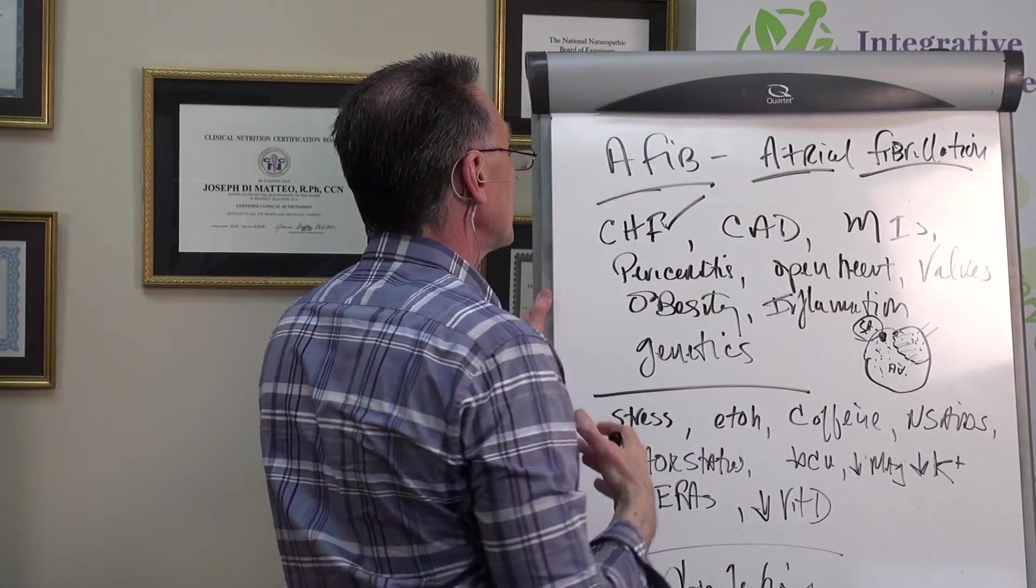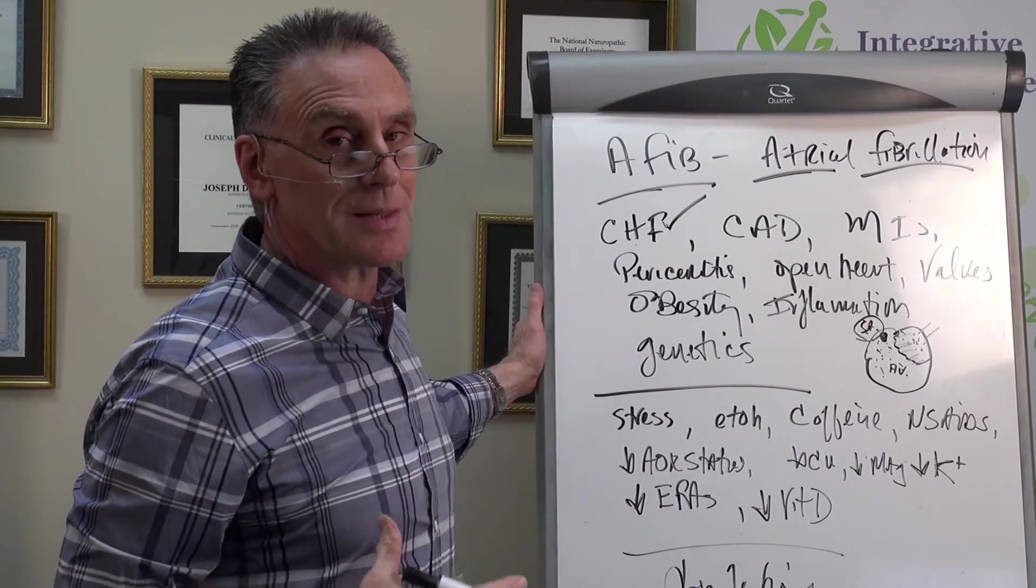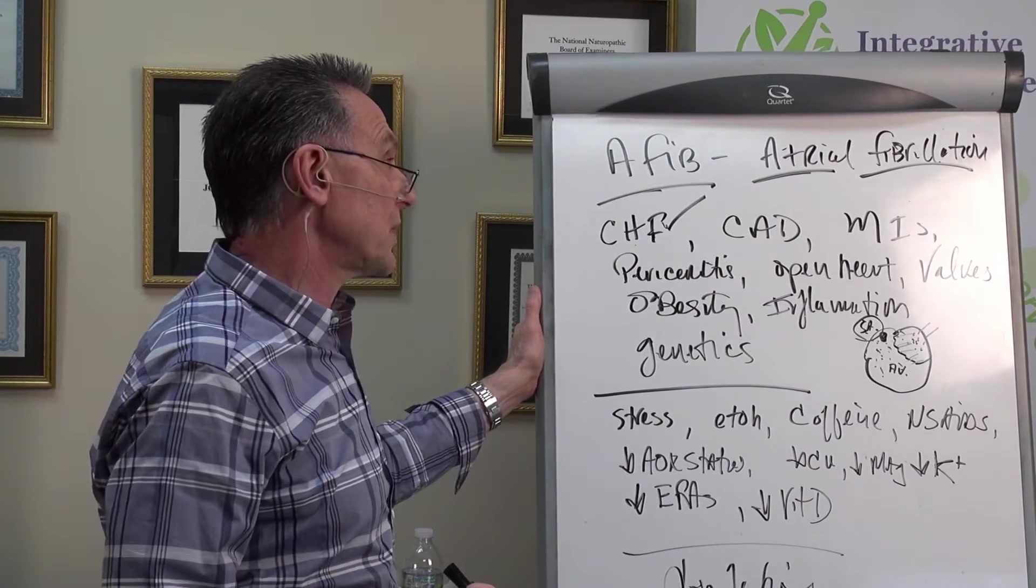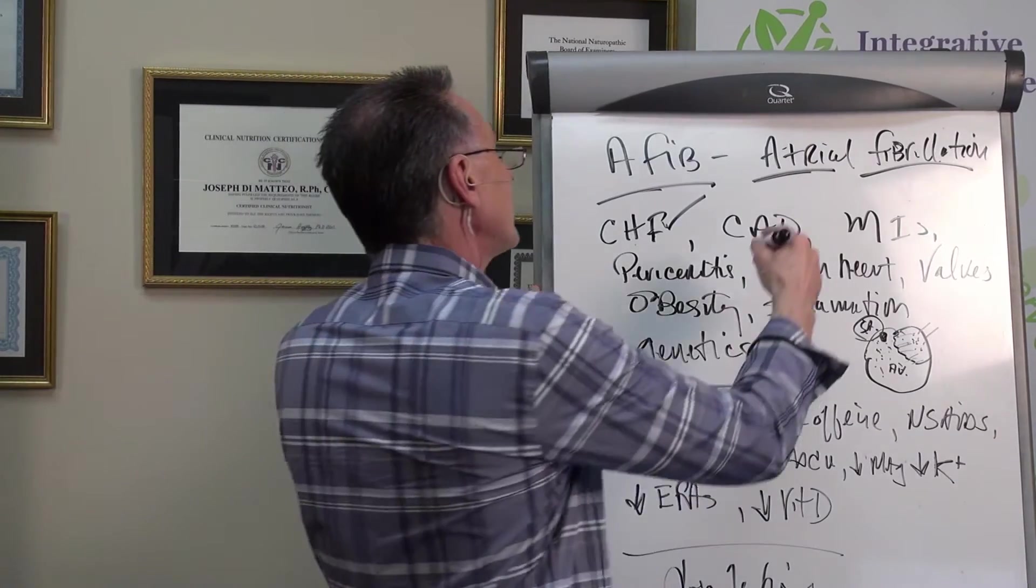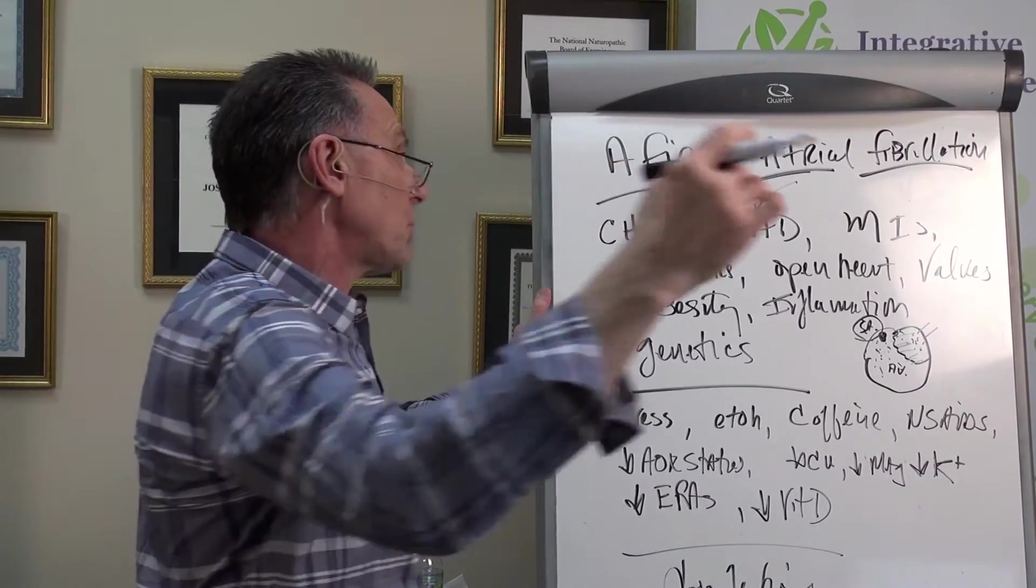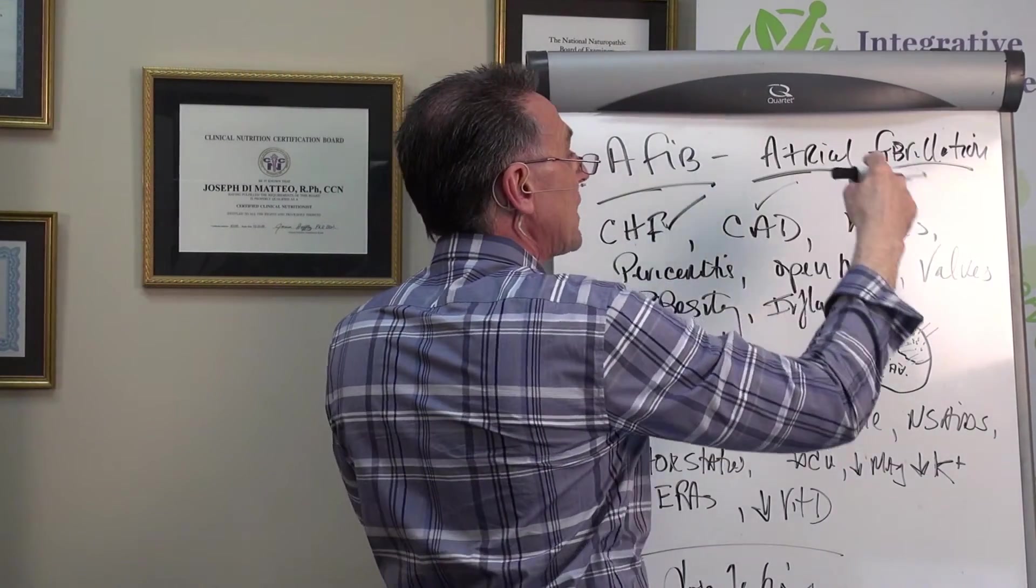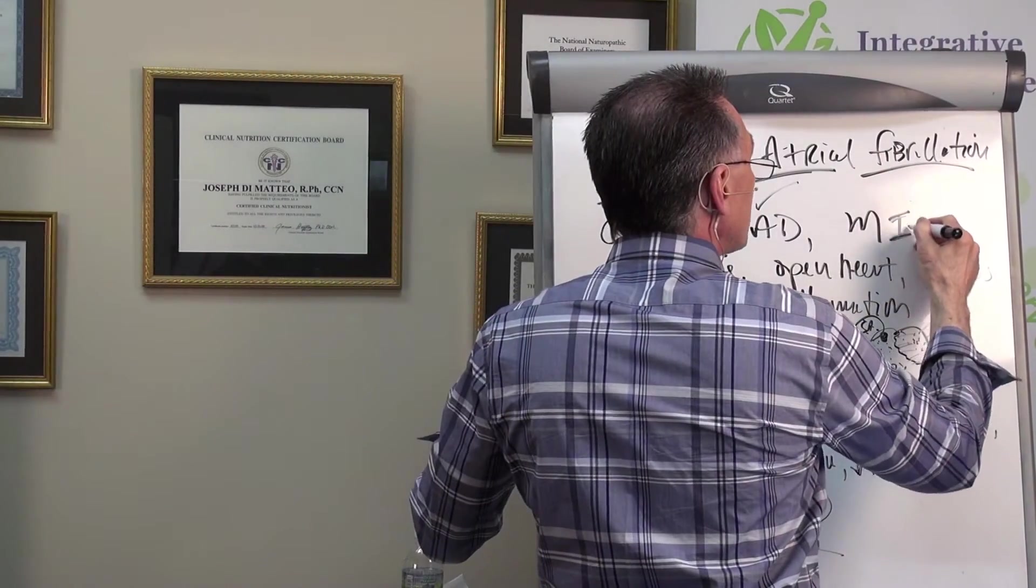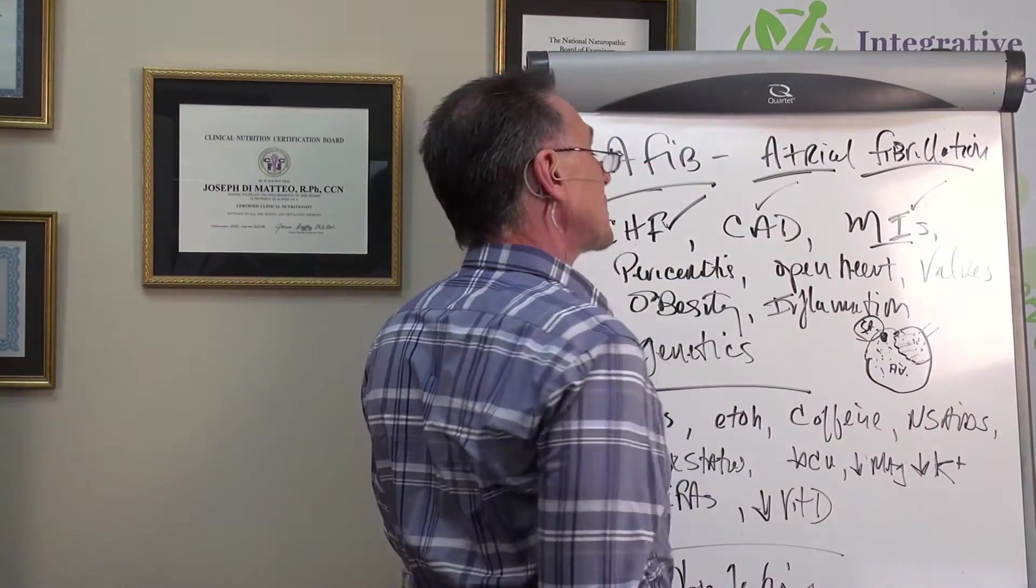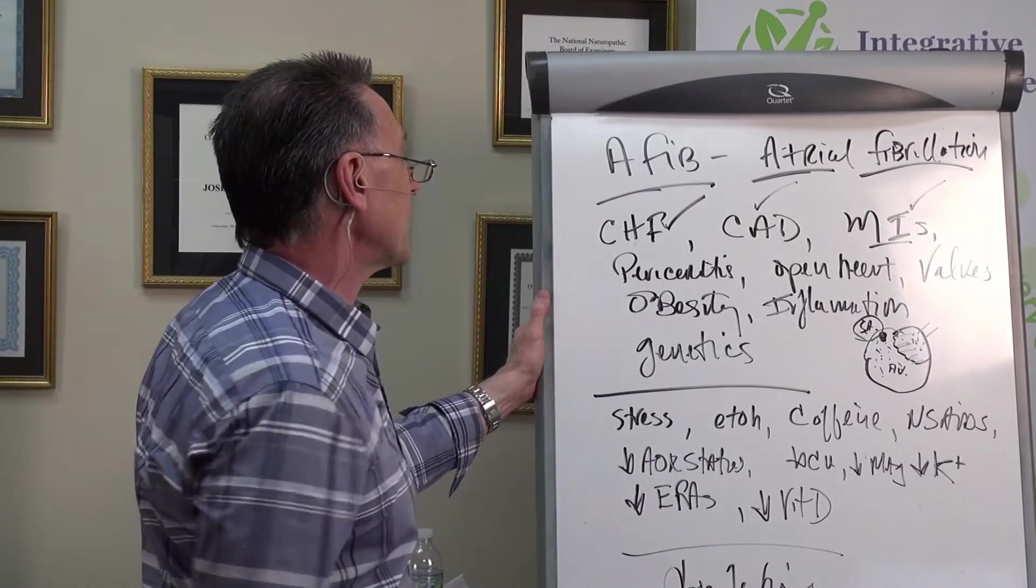Well, you could have congestive heart failure. Your heart muscle is weakening. It's not pumping well. So it's overworked, puts you at a higher risk for AFib. You could have coronary artery disease, narrowing of the arteries. That puts you at higher risk for AFib. You could have had, God forbid, one, two, or three past heart attacks.